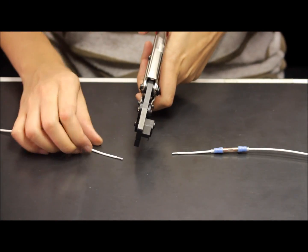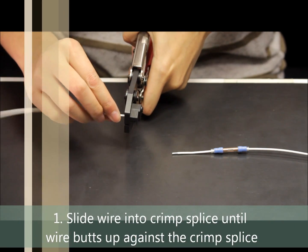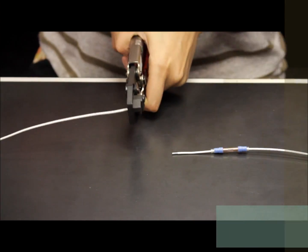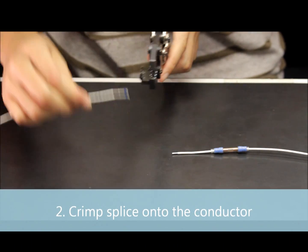Place the crimp splice into the crimping tool and insert the wire until the conductor is visible through the inspection hole. Crimp the splice onto the conductor.